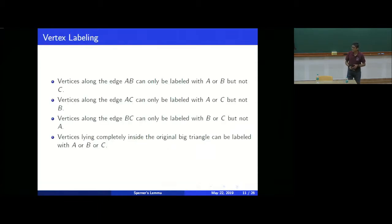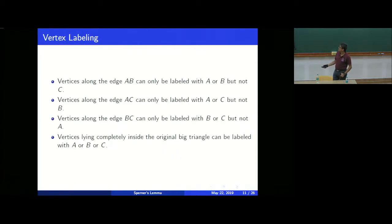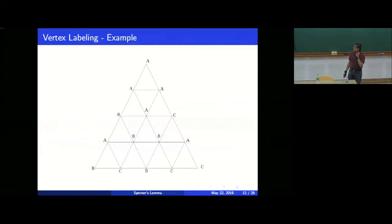Let us try to label the vertices of the triangle. For the labeling rules: any vertex lying on the outer edge opposite to C cannot be labeled C; any vertex on the edge opposite to A cannot be labeled A; any vertex on the edge opposite to B cannot be labeled B. Those are the first three rules. The fourth rule is simple — any internal vertex can be labeled any way you want. Any labeling is fine as long as it follows these four rules.